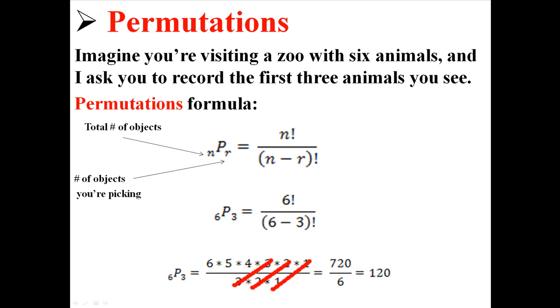Now notice we can also cross those things out. We can cross out the 3, the 2, and the 1, and we're just left with the 6 times 5 times 4 that I did before. So what we're doing in this formula makes sense compared to what we did before, and we find out that there are 120 ways of organizing these three animals when order matters.